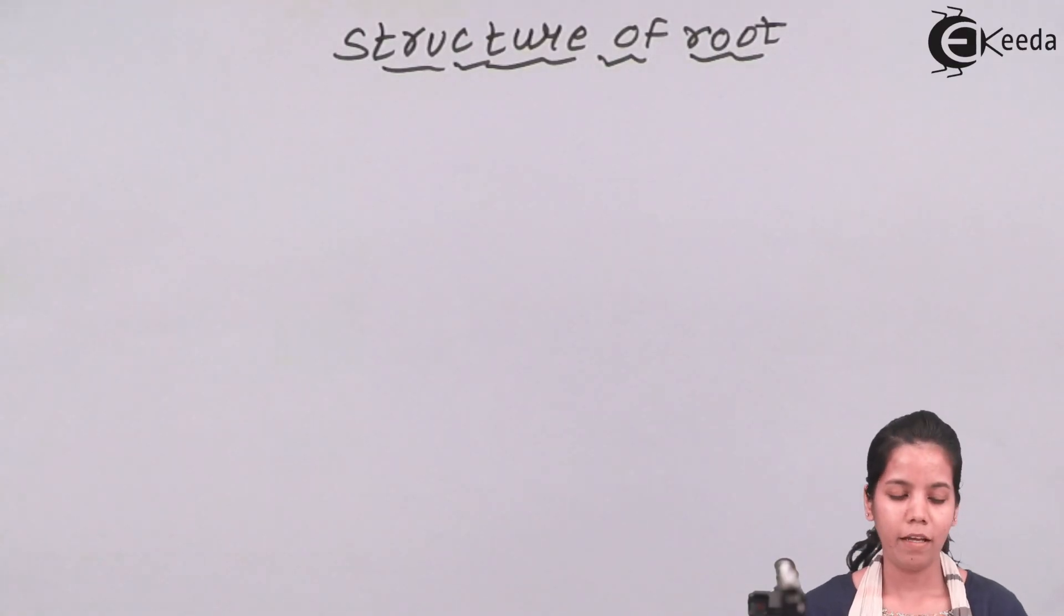Structure of Roots. If we see a structure of root, there will be one primary root, the thick root, and then there will be other secondary or tertiary roots. Now on this primary root, there are certain regions which we will be studying today.